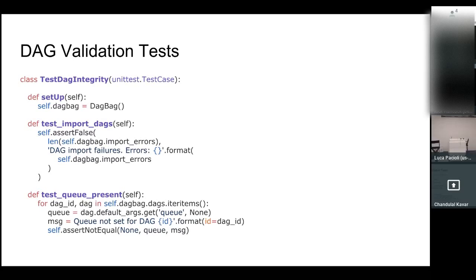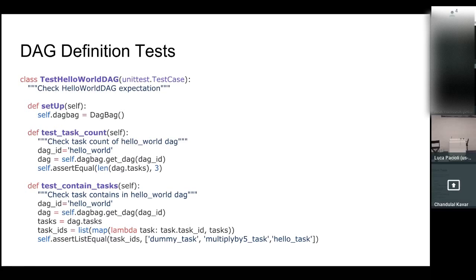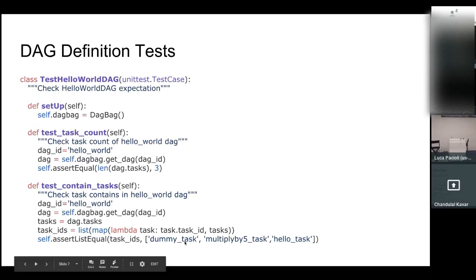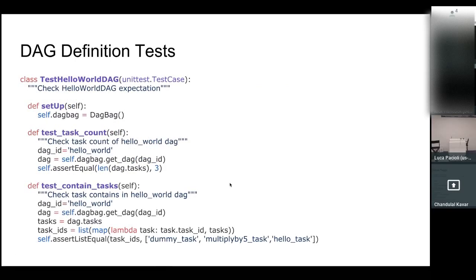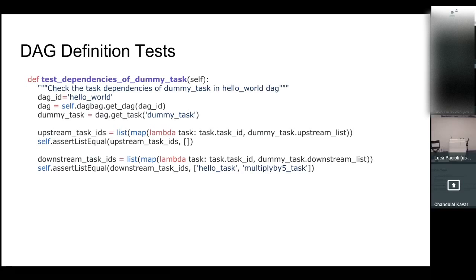For the DAG definition test — it is a kind of snapshot. It checks the number of tasks in the DAG. Here you can see a DAG ID 'hello_world', and for this DAG it checks how many tasks exist. If we add one more operator, we have to update this test. You can also check the types of tasks using the task ID — you can read from the DAG bag and assert that the DAG contains a specific number of tasks. You can also write tests for dependencies. Here is a test for the dependency of the dummy task — you get the task from the DAG bag and assert on the upstream and downstream dependencies. This verifies whether changes you are making are intentional or not.